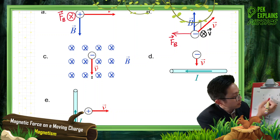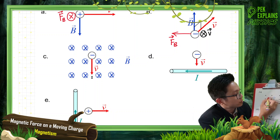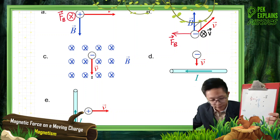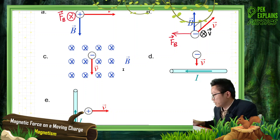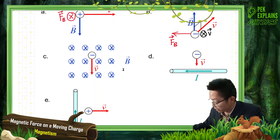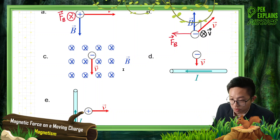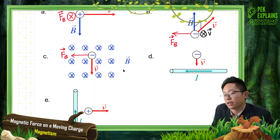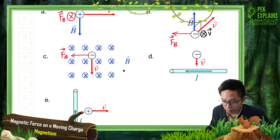The force for Question C is going to the left. That's the correct answer. Because it's a negative charge, my thumb points to the right, but the force is opposite the thumb — so the force goes to the left.